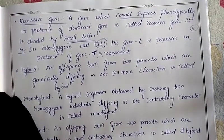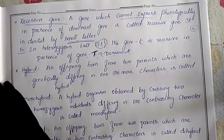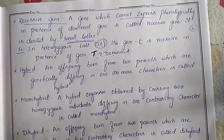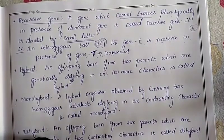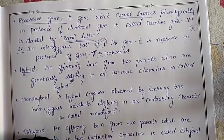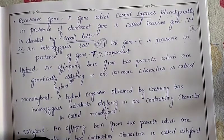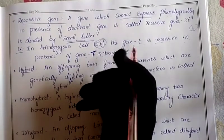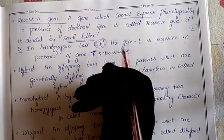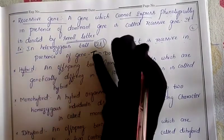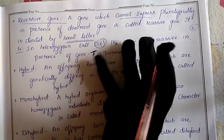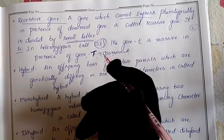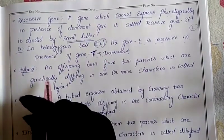Assalamu alaikum warahmatullahi wabarakatuhu. In our previous class we discussed the rediscovery of Mendelian genetics and certain basic terms like what is the meaning of gene, alleles, locus, phenotype, genotype, homozygous condition, heterozygous condition, dominant gene, and recessive gene.